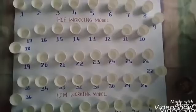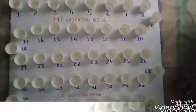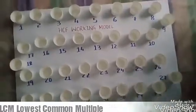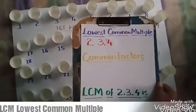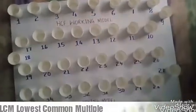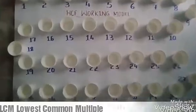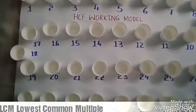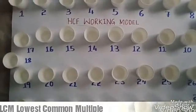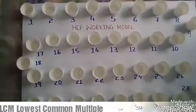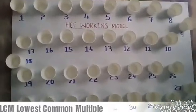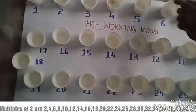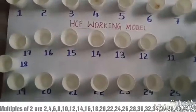Thank you. Now in this video we will learn how to find the LCM. LCM is the lowest common multiple. We'll find the LCM of the numbers 2, 3, and 4.